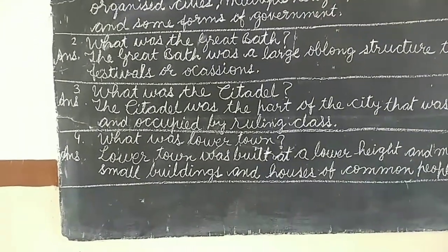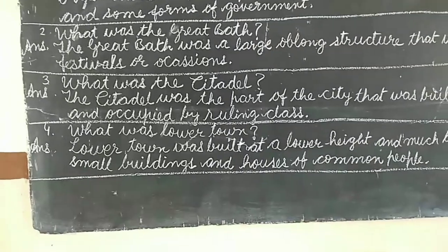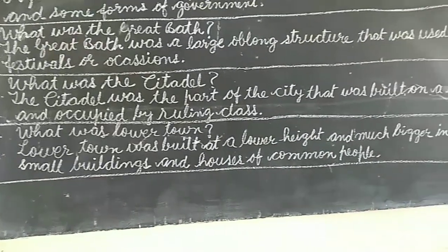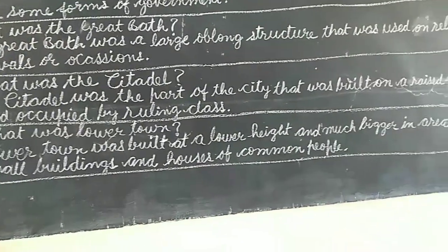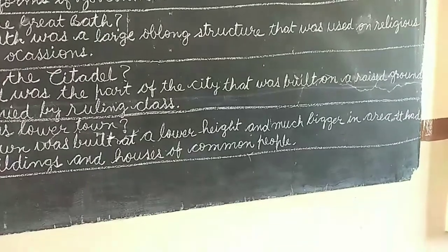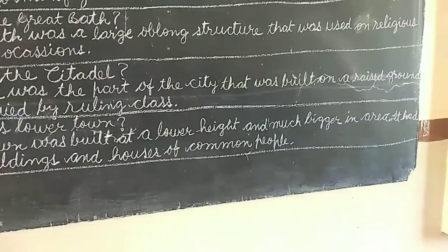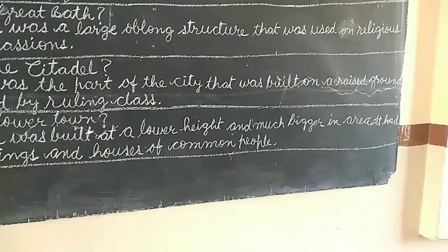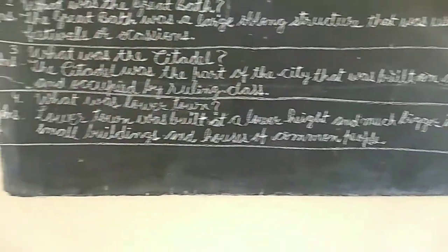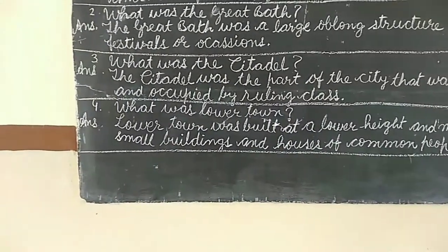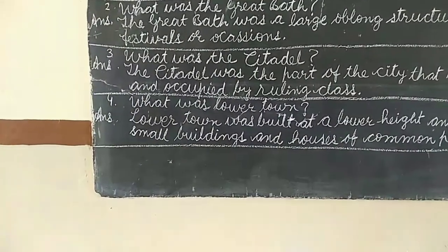Number 3: what was the citadel? The citadel was a part of the city that was built on raised ground and occupied by the ruling class.